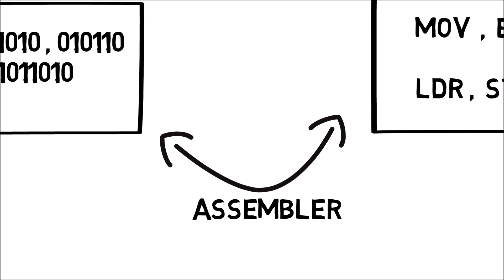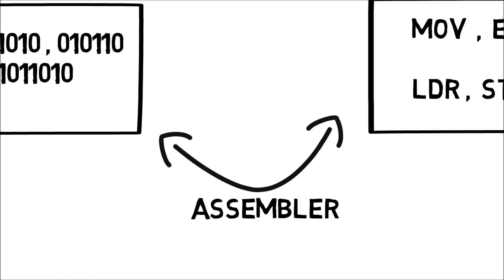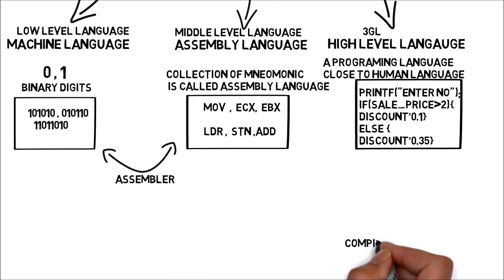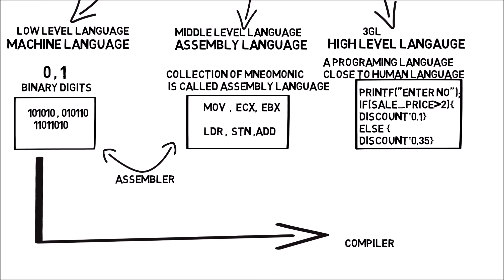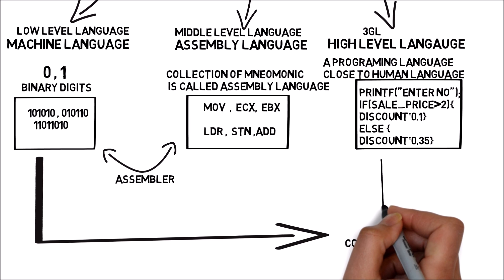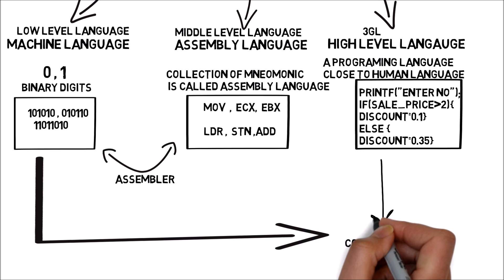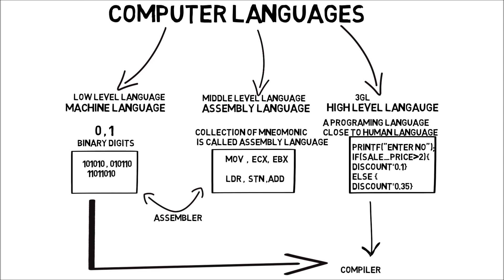Now it's been assembled, but we have also talked about high-level language — what will convert the program in high-level language? It will generate a compiler or interpreter. The compiler converts the source program line by line into binary language — from high-level language to machine language. In other words, it translates just like the compiler and assembler: assembler works for assembly language, and the compiler works for high-level language.